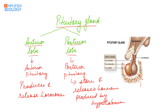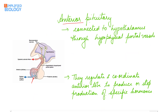The anterior pituitary is the larger portion; the posterior pituitary is the smaller one. The anterior pituitary consists of three parts: pars tubularis, pars intermedia, and pars distalis. The anterior pituitary is connected to the hypothalamus through hypophysial portal vessels.